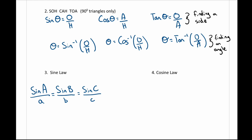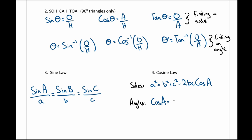Cosine law is also for non-right angle triangles and has two different formulas. The first is a² = b² + c² − 2bc·cosA, for finding sides. When finding angles it's the same formula rearranged: cosA = (b² + c² − a²) / 2bc. The key thing is the angle or side you're looking for must pair up — they have to be a pair in the formula.